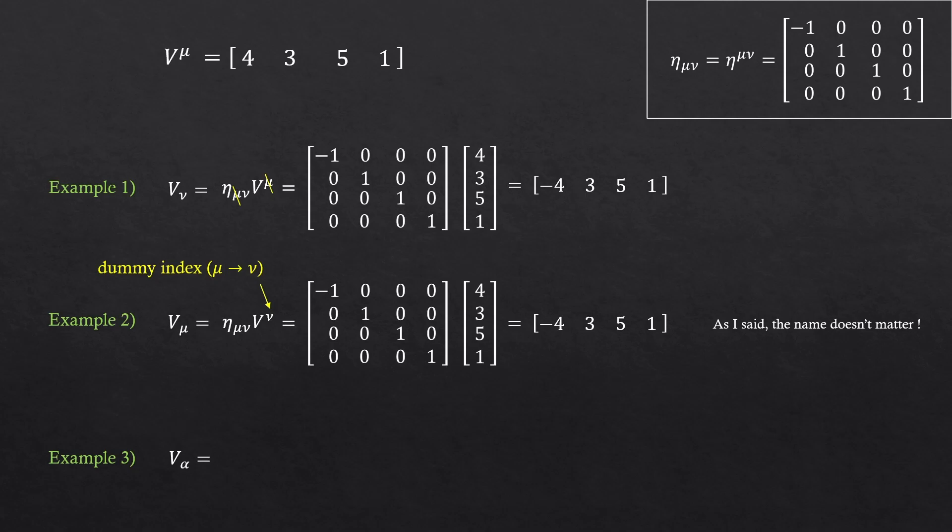So can you guess what the answer of this should be? You can simply rename one of the indices and contract the tensor with the indices. So it's the same answer. We just wanted an index at the bottom. The name doesn't matter. And of course, if there were other tensors attached to here, they just gotta be named in the same way. Keep things consistent, that's all.